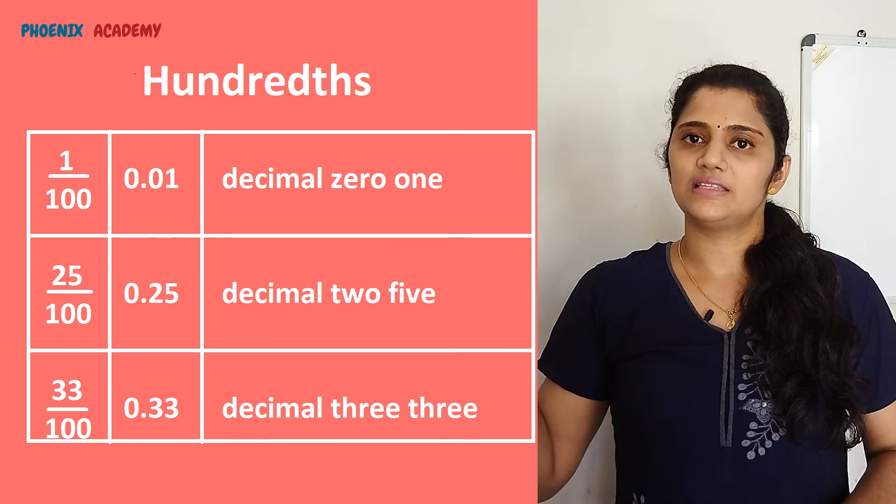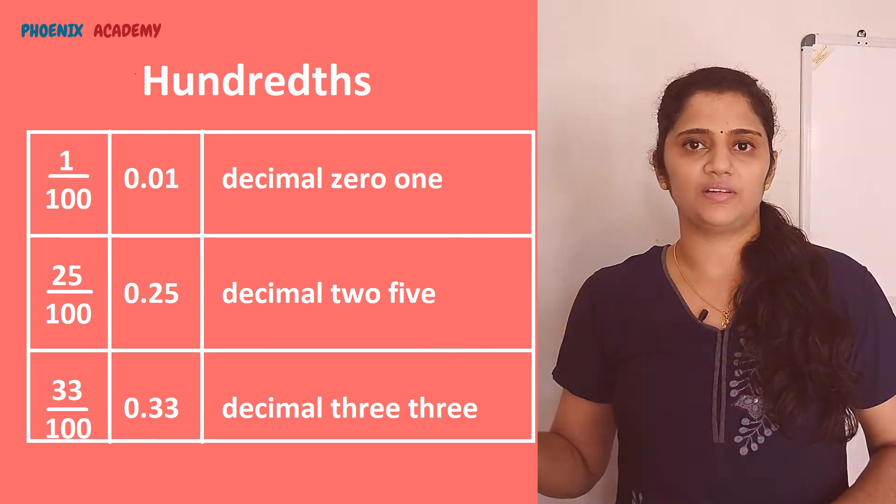Decimal fractions with 100 as a denominator are called hundredths. To represent a fraction with 100 as a denominator as a decimal fraction, just put a dot to the left of the digits in the tenths place of the numerator. These are some examples.